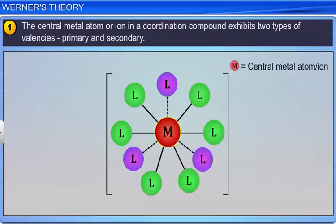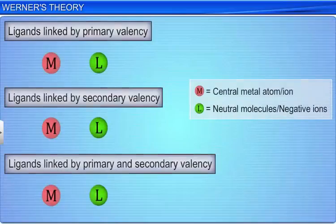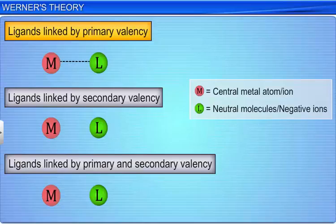While writing the structure of metal complexes, the ligands that are linked by primary valency are shown by dotted lines, while those linked by secondary valency are shown by thick lines.